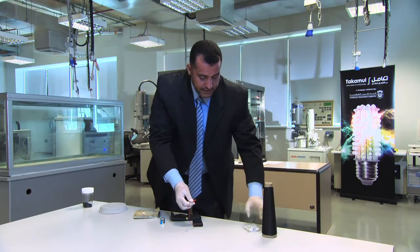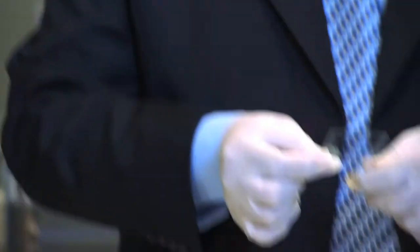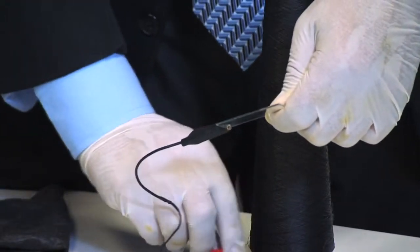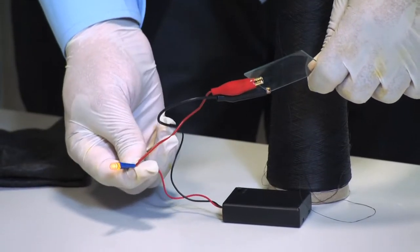One more application is to make conductive glass. This glass is mixed with carbon nanotubes and is conductive. Again, the same test. You can see the light is on.